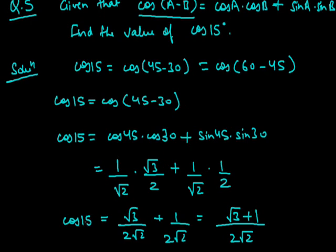So by using trigonometry ratios and the trigonometry table for specific angles — 0°, 30°, 45°, 60°, and 90° — we can find out many other trigonometry ratios. In this question we found the value of cos 15° using the values of cos 45°, cos 30°, sin 45°, and sin 30° from the table. In this way we can solve many questions based on trigonometry ratios.